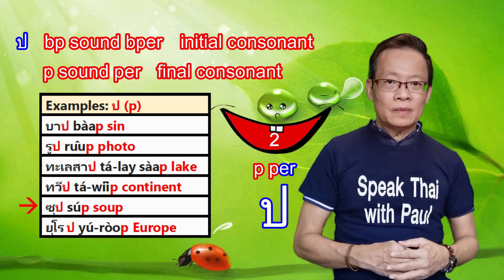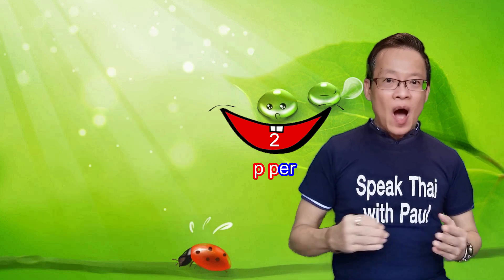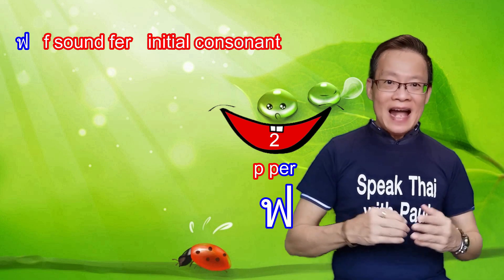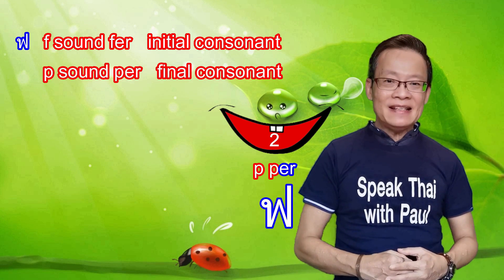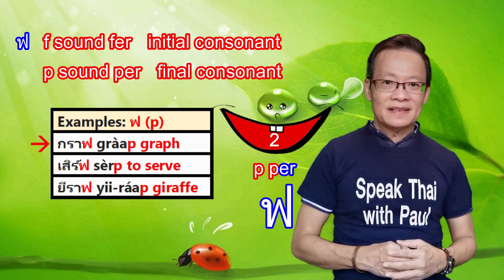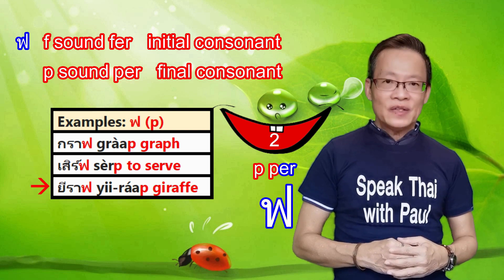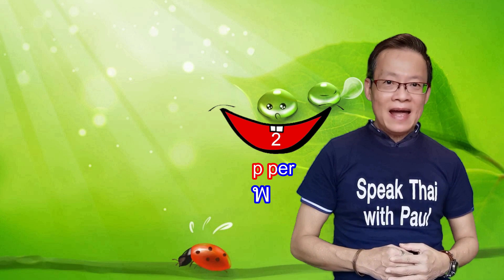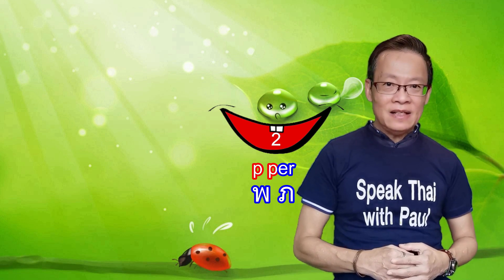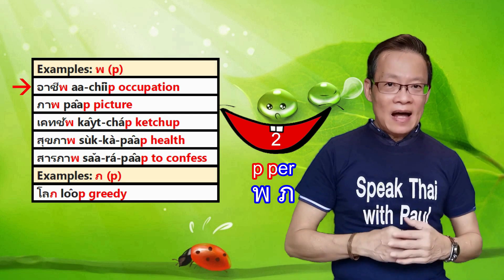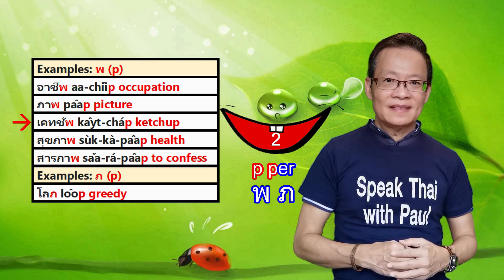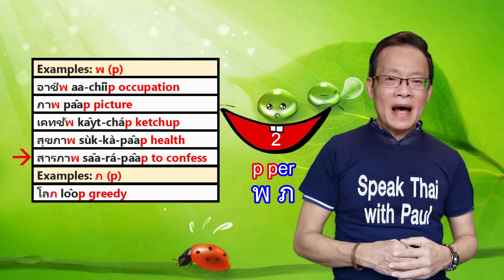Next, 'por pla' — por pla is the BP sound when used as an initial consonant. However, as a final consonant, it produces the P sound. Examples: 'bap' (sin), 'rup' (photo), 'lesap' (small), 'thawit' (continent), 'yurp' (Europe). Next, 'for fun' — for fun is the F sound when used as an initial consonant. However, as a final consonant, it produces the P sound in commonly loaned words from English. Examples: 'graph,' 'serve,' 'giraffe.' Then 'por phan' and 'por sam phao' — these two consonants produce the same P sound whether as initial or final consonants. Examples: 'active,' 'occupation,' 'ketchup,' 'sukaphap' (health), 'saraphap' (to confess).